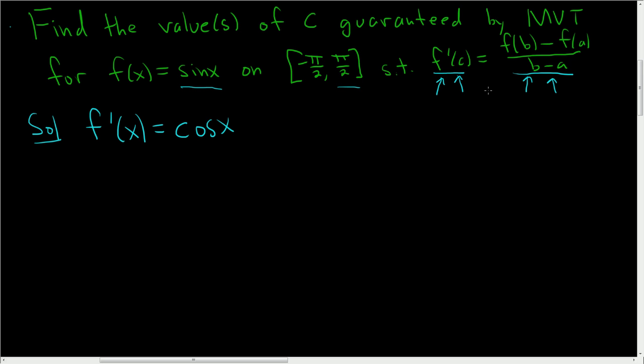All right, now we just have to compute the expression over here. Now this is f prime of C. I'm just calling it x and not calling it C, but it's the same thing. All right, so here, this is our A and this is our B.